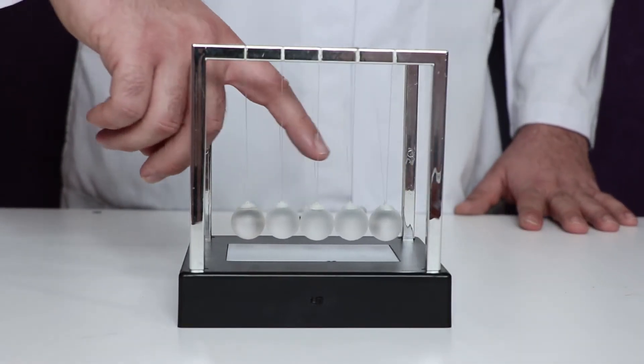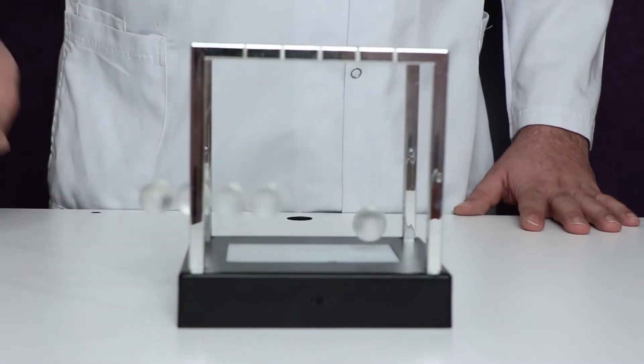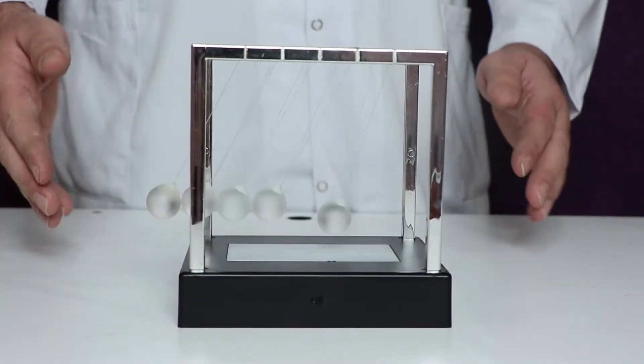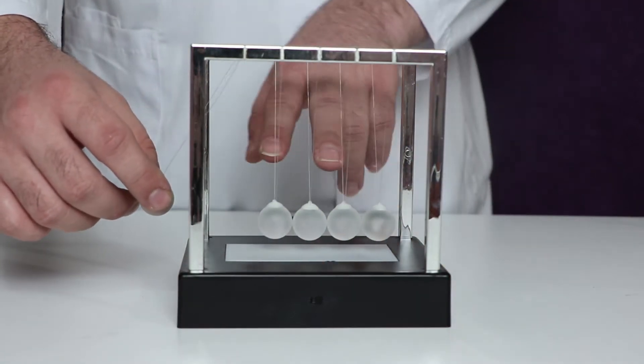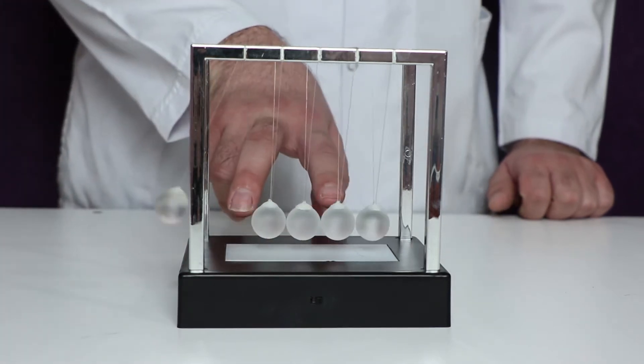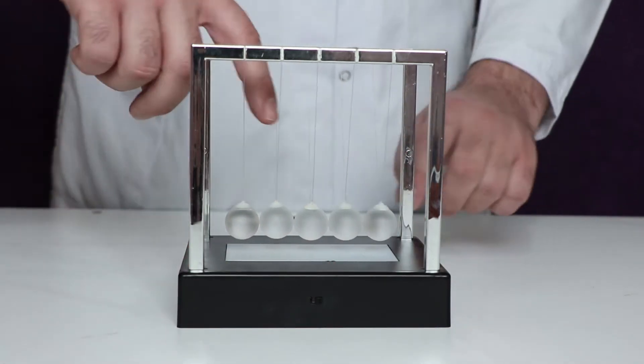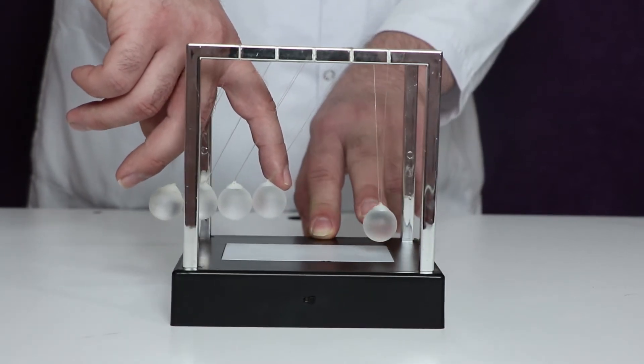And if I do the same thing for four balls, look at that. At the beginning, the four balls are stationary. When I release these four stationary balls, if I release four balls and one is stationary, now you are going to see only one ball stationary.